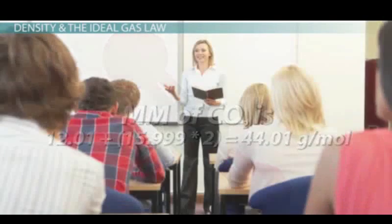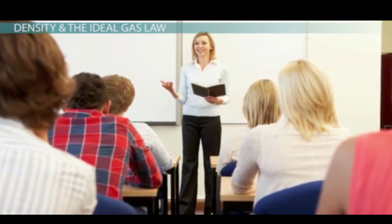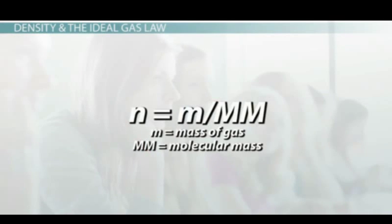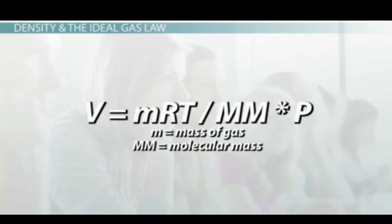We can substitute for n into the ideal gas law in order to get mass into the equation. Since n equals mass divided by molecular mass, this would insert into our equation as V equals MRT divided by the molecular mass times P.